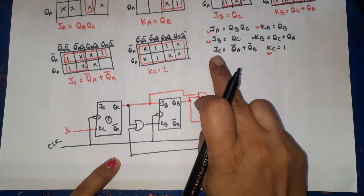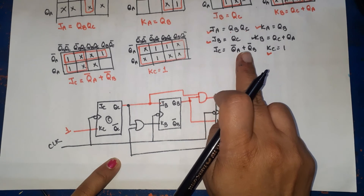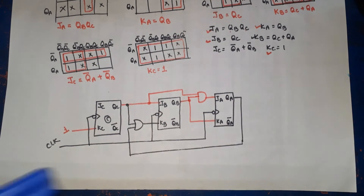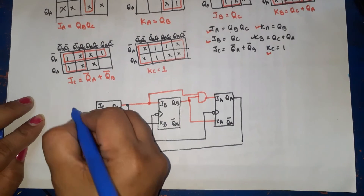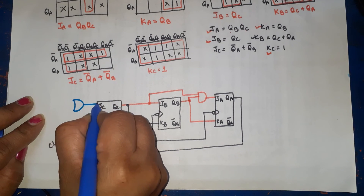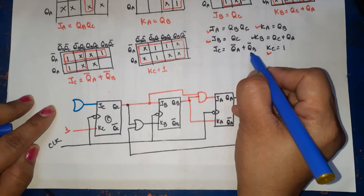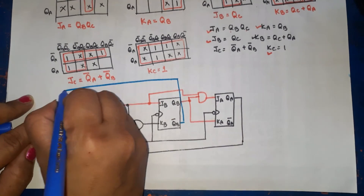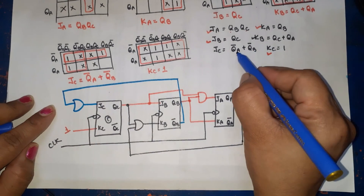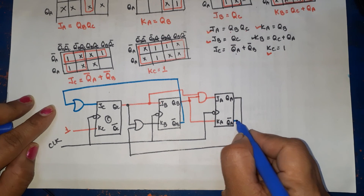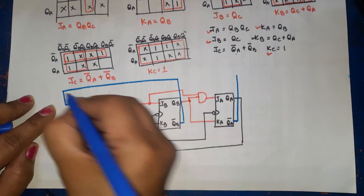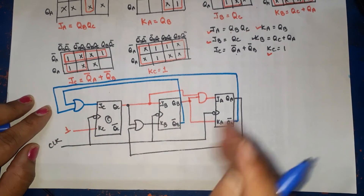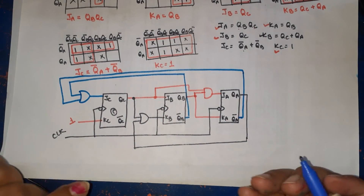For JC, we need QA-bar plus QB-bar, so we use an OR gate. One input is QB-bar (taken from the QB flip-flop complement output) and the other input is QA-bar (from the QA complement output). The OR gate output connects to JC.